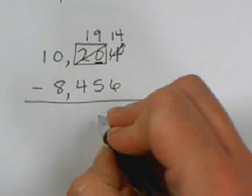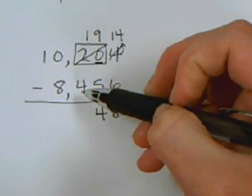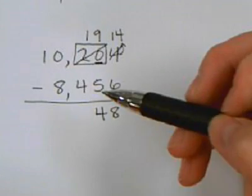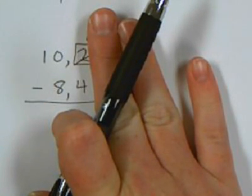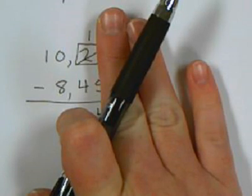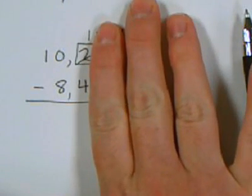9 minus 5 is 4. 1 minus 4 I cannot do, so we start all over. Ignore everything that we've done so far and we start over. We can't take 4 from 1, so we go to the next place.